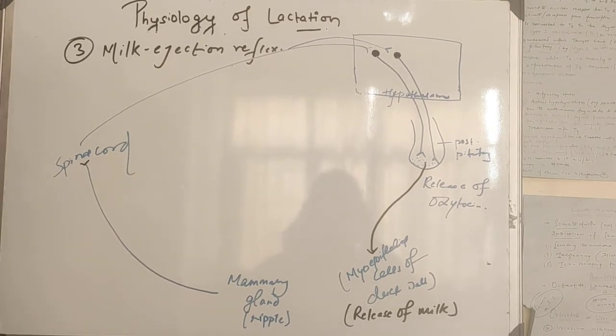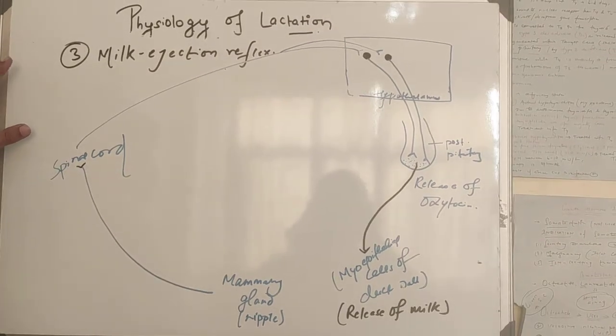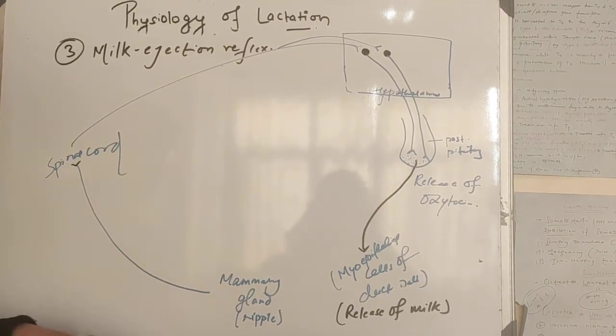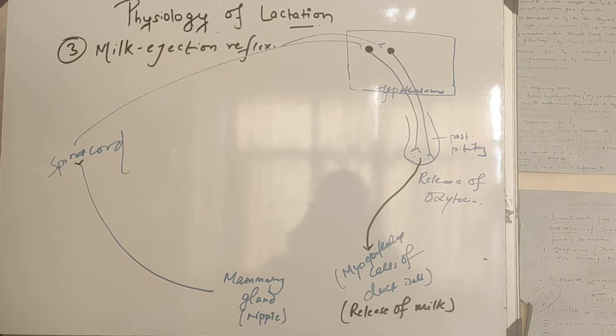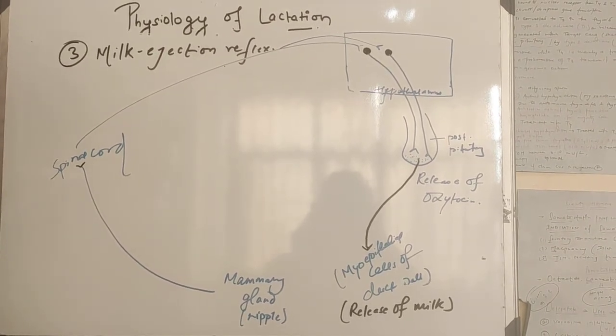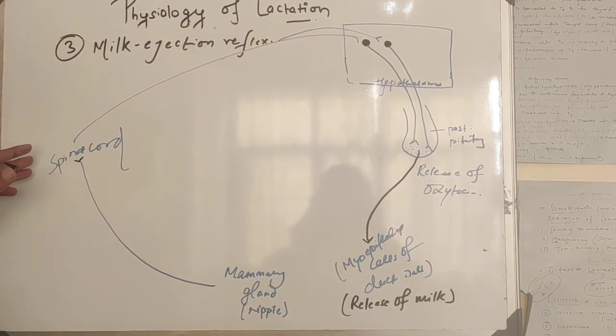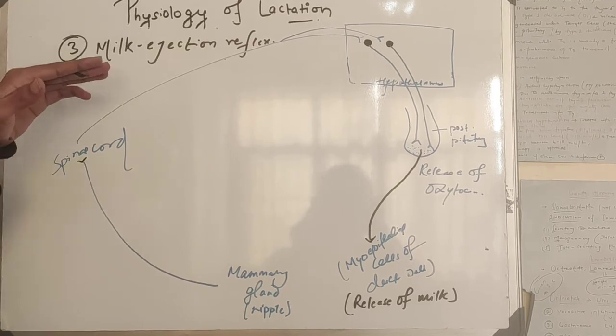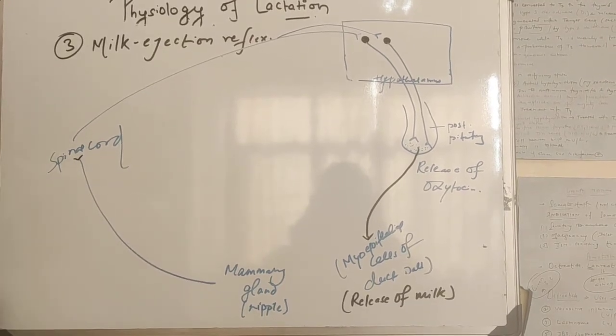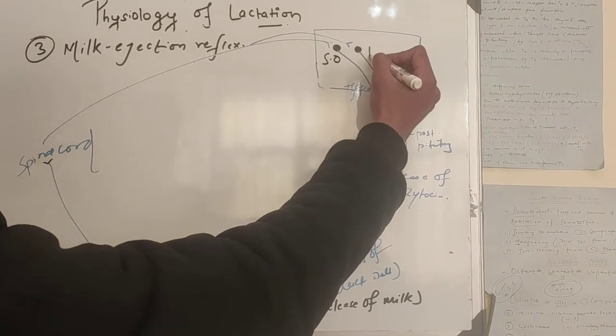Now I am going to talk about milk ejection reflex, which is a function of oxytocin hormone. The mammary gland has many touch receptors mainly around its nipple. When the baby suckles the nipple, somatic afferent impulses are sent to spinal cord, and via spinal cord impulses are sent to hypothalamus, to supraoptic nucleus and paraventricular nucleus.